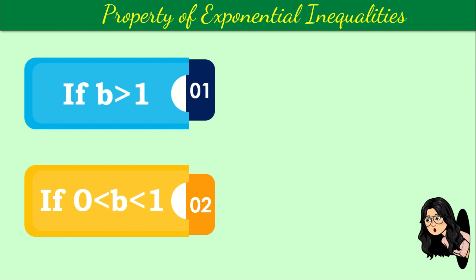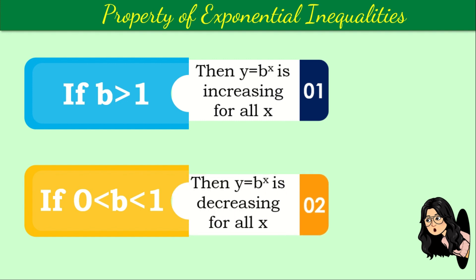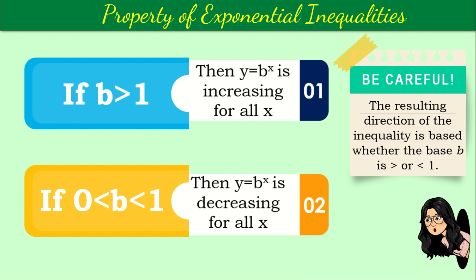Now, with a given exponential inequality, if the base B is greater than 1, then y equals b raised to the power of x is increasing for all values of x. If the base B is greater than 0 but less than 1, then y equals b raised to the power of x is decreasing for all values of x. Be careful — every time you solve exponential inequalities, you need to take note that the resulting direction of the inequality is based on whether the base B is greater than or less than 1.